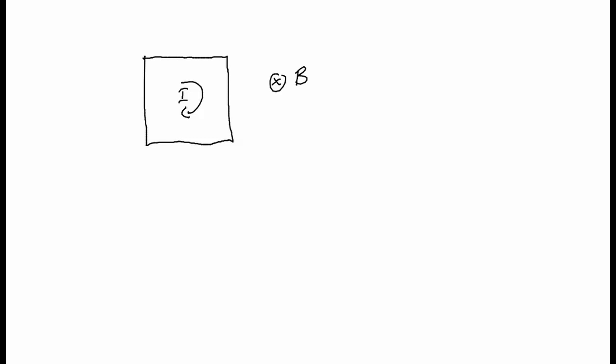What are the forces? The force on the top wire: right cross B — right cross into the page — points up. The right side wire feels a force to the right, the bottom wire feels a force down, and the left wire feels a force to the left. We see that the forces are going to cancel due to symmetry and they're also not going to cause a torque. If anything, they would try to stretch the wire out, but we assume the wire is strong enough to resist that. So the net force is equal to zero and the net torque is equal to zero — the loop is in equilibrium here.